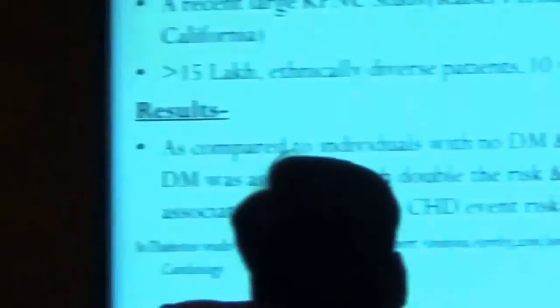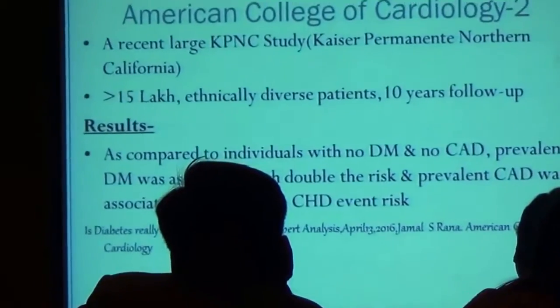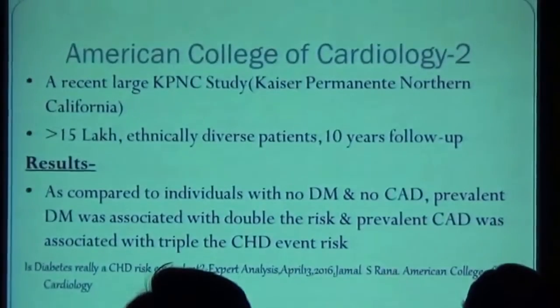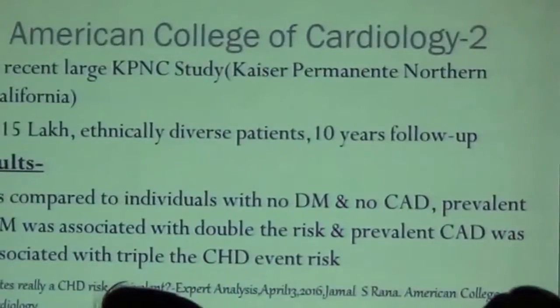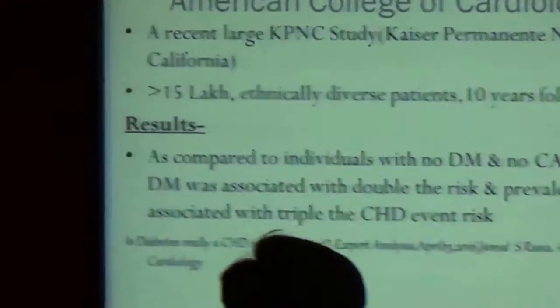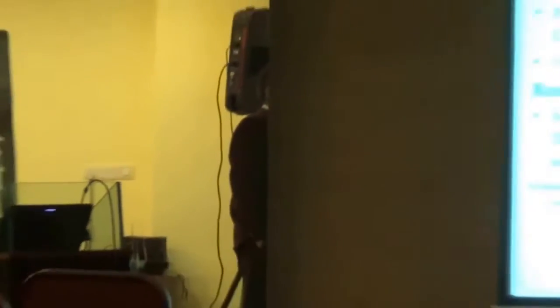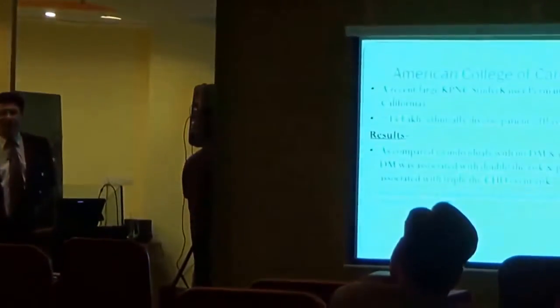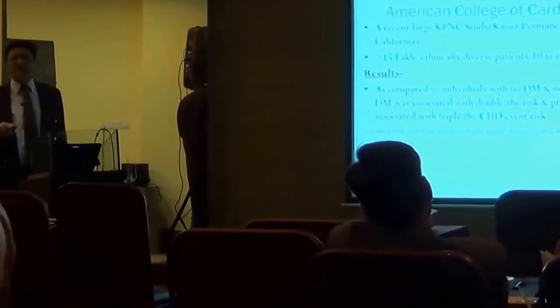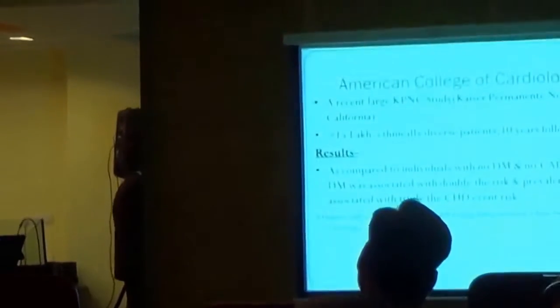The American College of Cardiology has taken note of a recent very important study known as the Kaiser Permanente North California study. The beauty of this KPNC study is that, as compared to individuals with no diabetes and no coronary artery disease, prevalent diabetes was associated with double the risk, but prevalent coronary artery disease was associated with triple the risk of coronary heart disease events. This means that yes, diabetes is a risk factor for future MI, future heart failure, and future unstable angina, but pre-existing coronary heart disease is a bigger risk factor. Both are not equivalent.